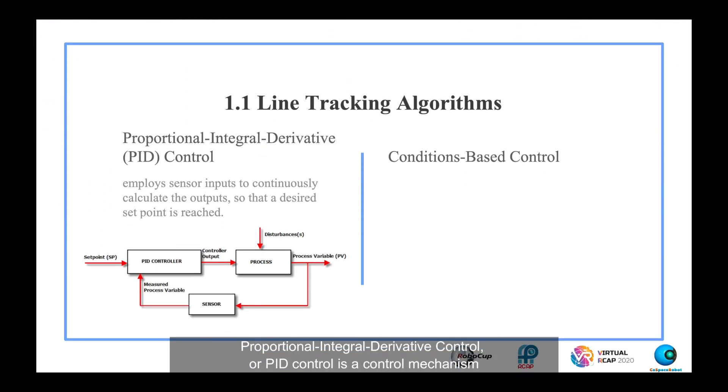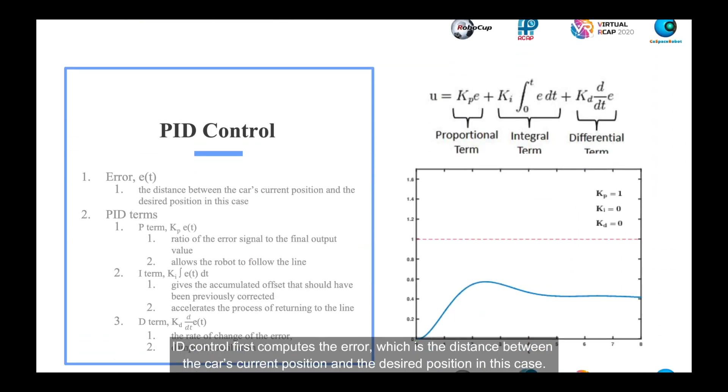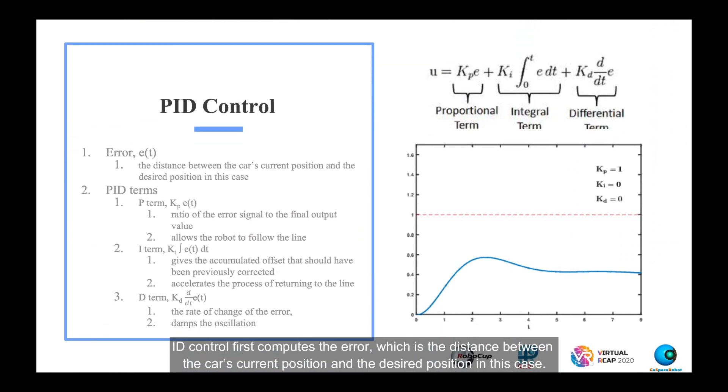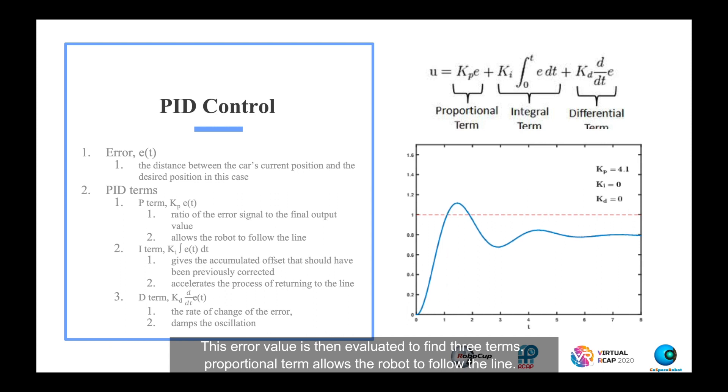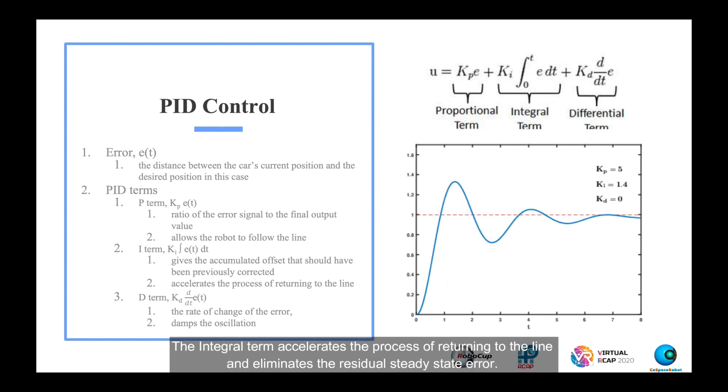Proportional integral derivative control, or PID control, is a control mechanism that employs sensor inputs to continuously calculate the outputs so that a desired setpoint is reached. PID control first computes the error, which is the distance between the car's current position and the desired position. This error value is then evaluated to find three terms. The proportional term allows the robot to follow the line. The integral term accelerates the process of returning to the line and eliminates the residual steady-state error.